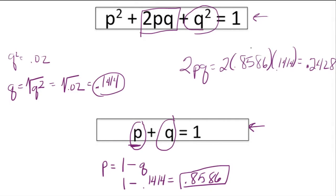If we wanted to, we could also determine how many individuals are healthy or homozygous dominant. That's easy for us to do now because we know the value of p. We say 0.8586 squared, or 0.8586 times 0.8586, which gives us 0.7372.